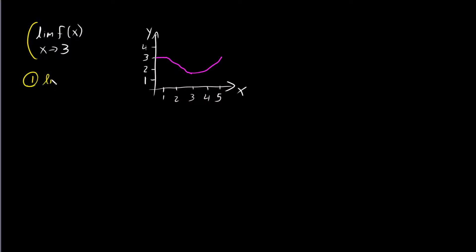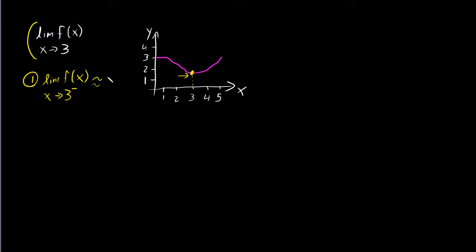First of all, what is the limit of the function f of x as x approaches 3 from the left? There's a little minus sign here, and this minus sign means from the left. So right here is where the value of 3 is. As we approach the value of 3 from the left, what value does the function have? In this case, it looks like it's about 2.